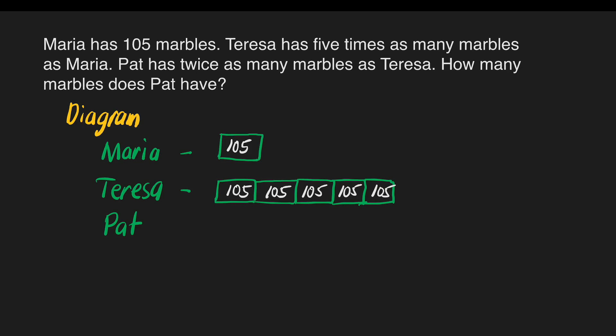To find how many marbles Teresa has, we multiply 105 times 5 — or we could add 105 five times, but the easier way is to multiply. 5 times 5 is 25 — write 5, carry 2; 5 times 0 is 0, plus 2 is 2; 5 times 1 is 5. So Teresa has 525 marbles.